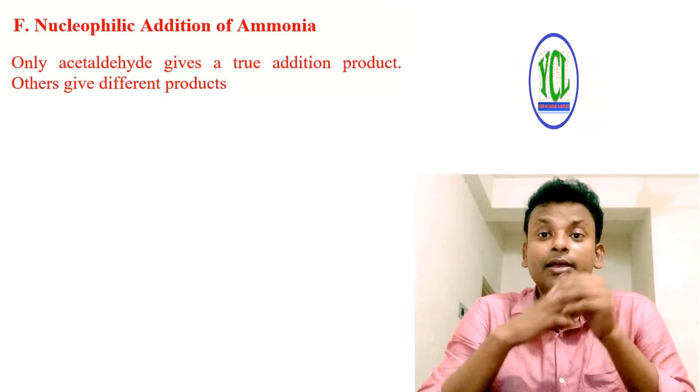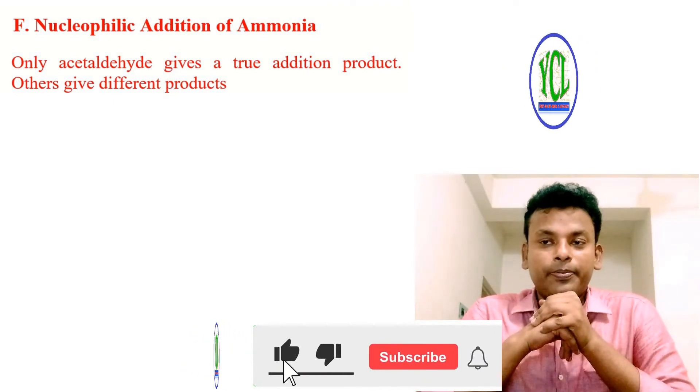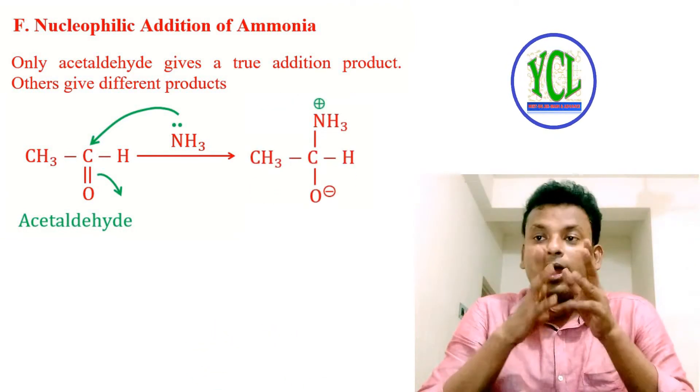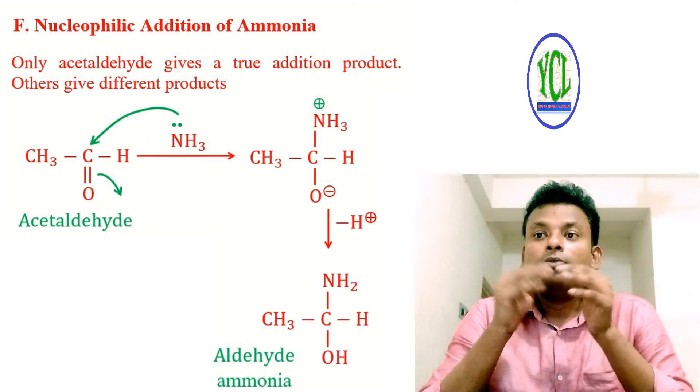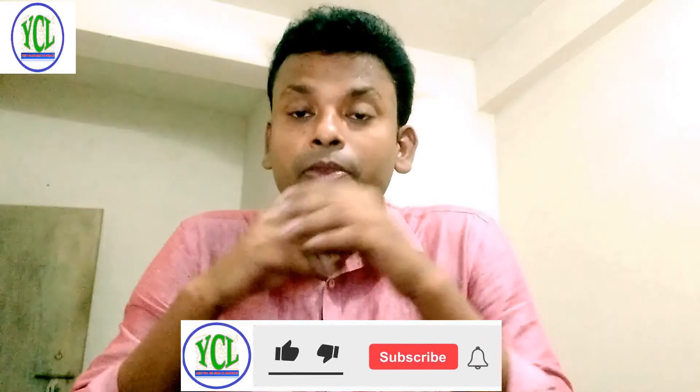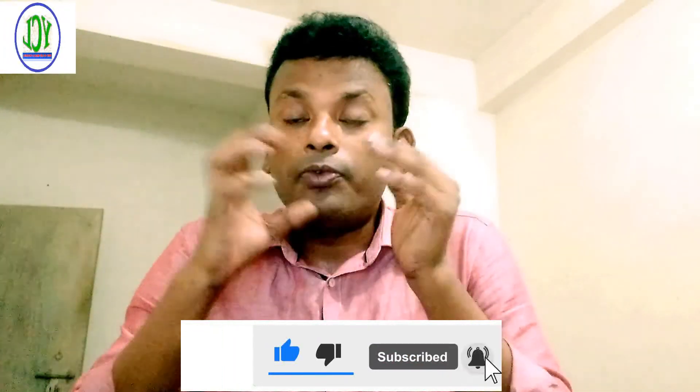Nucleophilic addition of ammonia: only acetaldehyde gives two addition products, while other aldehydes such as formaldehyde and benzaldehyde, and ketones, give condensation products. Acetaldehyde reacts with ammonia to give an addition product and loses a proton from the addition product of ammonia. Thank you — I think you are enjoying the video and understanding nucleophilic addition reaction. If anything is not clear, comment and I will reply. I will be coming with the next part of reaction mechanism of organic chemistry, that is radical addition reaction. Thank you everyone.